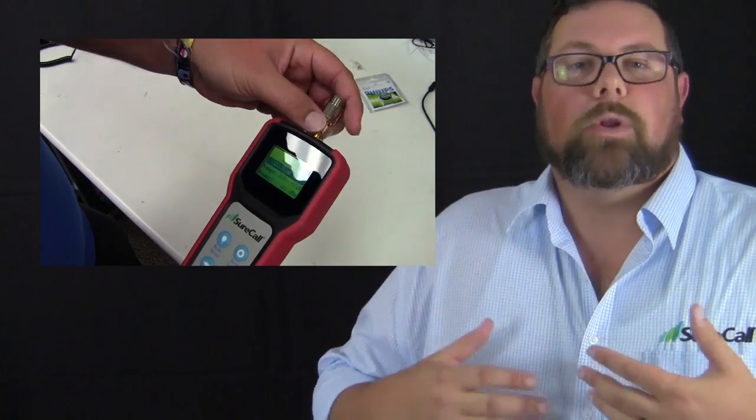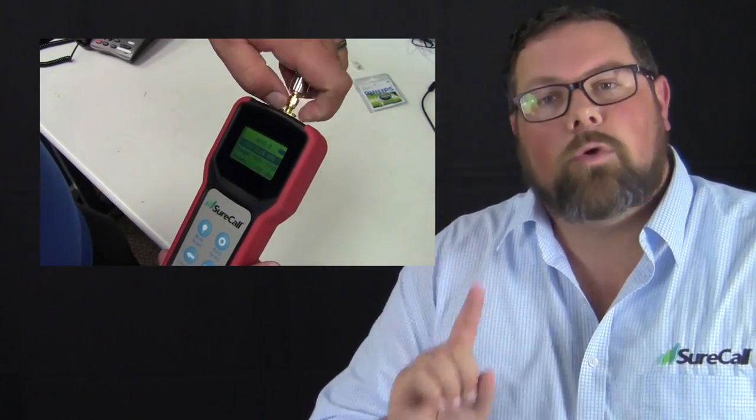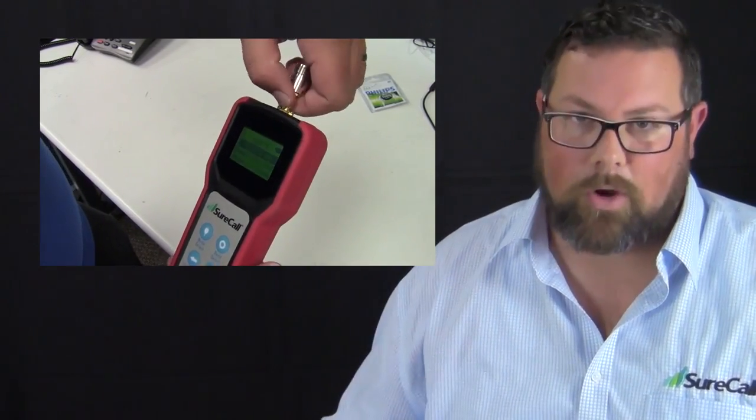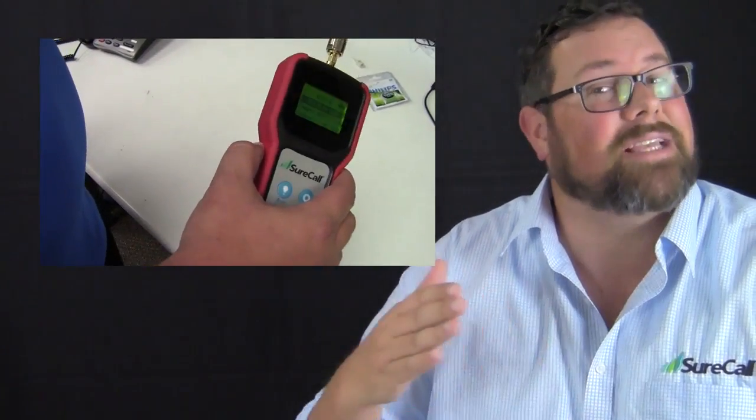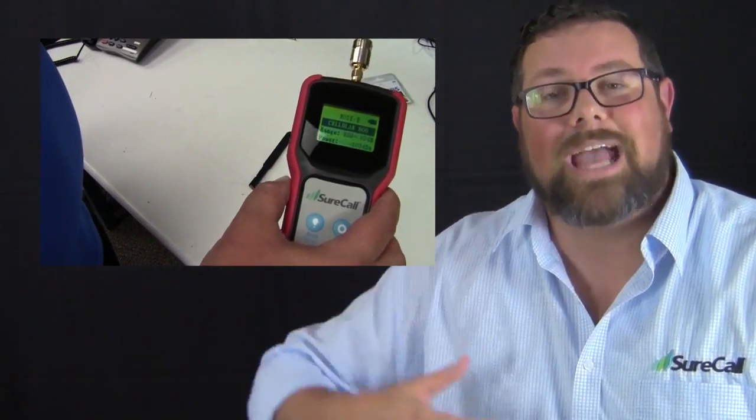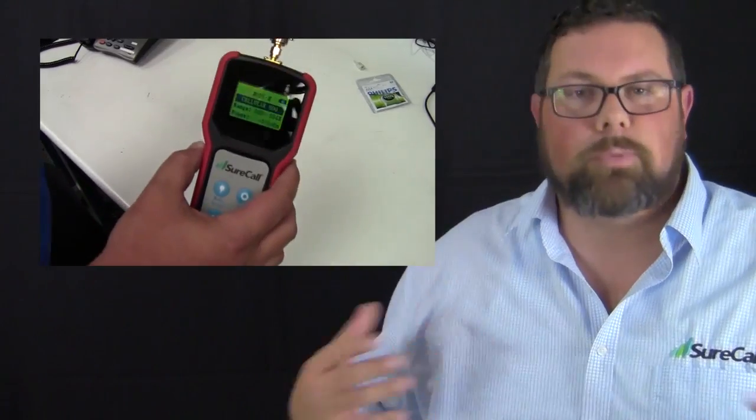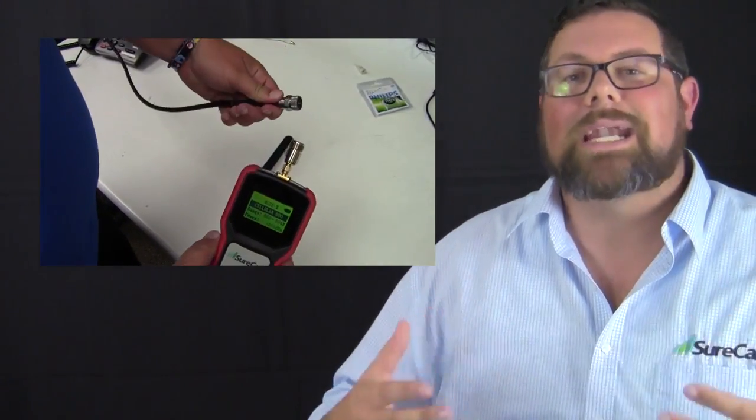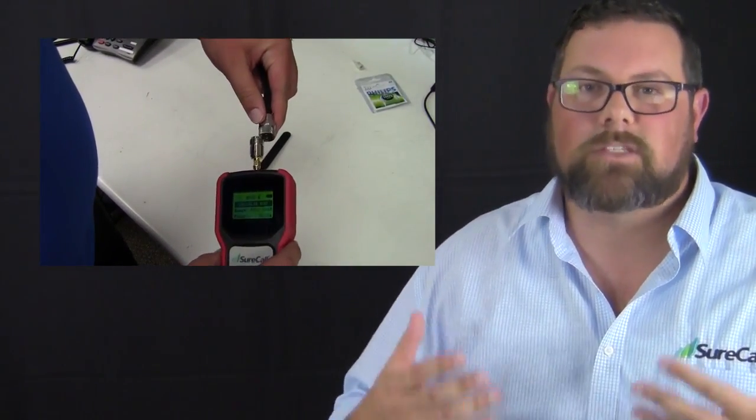The signal meter is really going to help you in a couple of different ways. Number one, if you're going with your cell phone, your cell phone only supports one carrier, and signal boosters support multiple carriers. And also the carrier that your customer is using may not necessarily match with the one that you're using to actually do the signal readings with the phone. So you really want to make sure that you've got a signal meter that does multiple different carriers so you can really get an idea of what kind of signal strength you have to begin with.